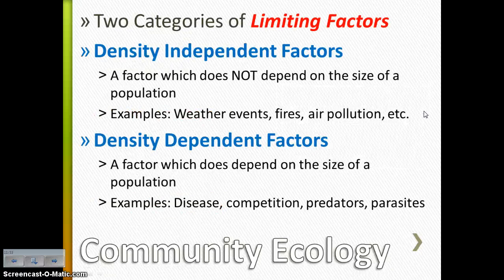Some limiting factors depend on the size of a population and others don't. The limiting factors that don't depend on the size of a population are called density independent factors — something like the weather, fires, or air pollution. Air pollution can control the size of a population, but it doesn't depend on the size of a population. Density dependent factors, however, do depend on the size of a population. This would be something like disease, competition, predators, or parasites.